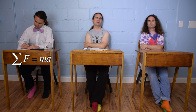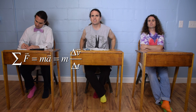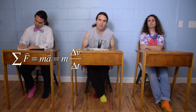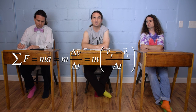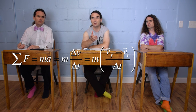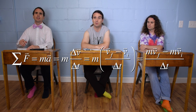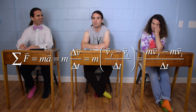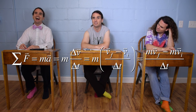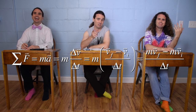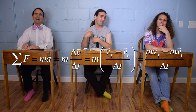Couldn't we also have gotten to that equation using mass times acceleration? Because acceleration equals the change in velocity over the change in time, and change in velocity is the final velocity minus the initial velocity. Multiplying through by mass gives us the same equation: force equals mass times velocity final minus mass times velocity initial, all divided by the change in time.